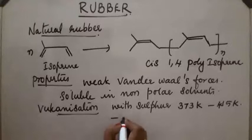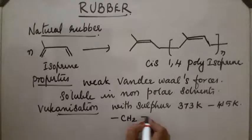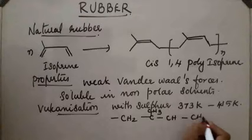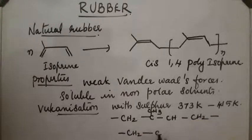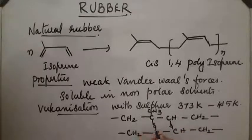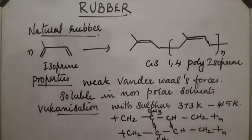In vulcanization, sulfur linkages are formed between two polymer chains of rubber. For example, one chain (-C-CH2-CH3-CH-CH2-) is cross-linked to another chain (-CH2-C-CH3-CH-CH2-) via sulfur bridges. Due to these sulfur cross-links, the rubber becomes more hard and tough.